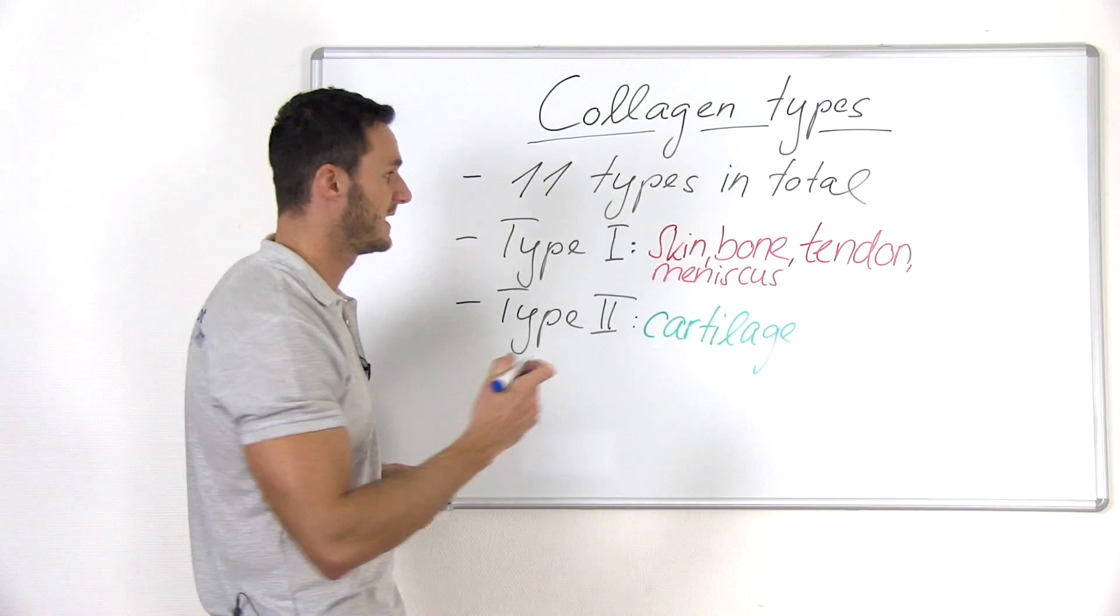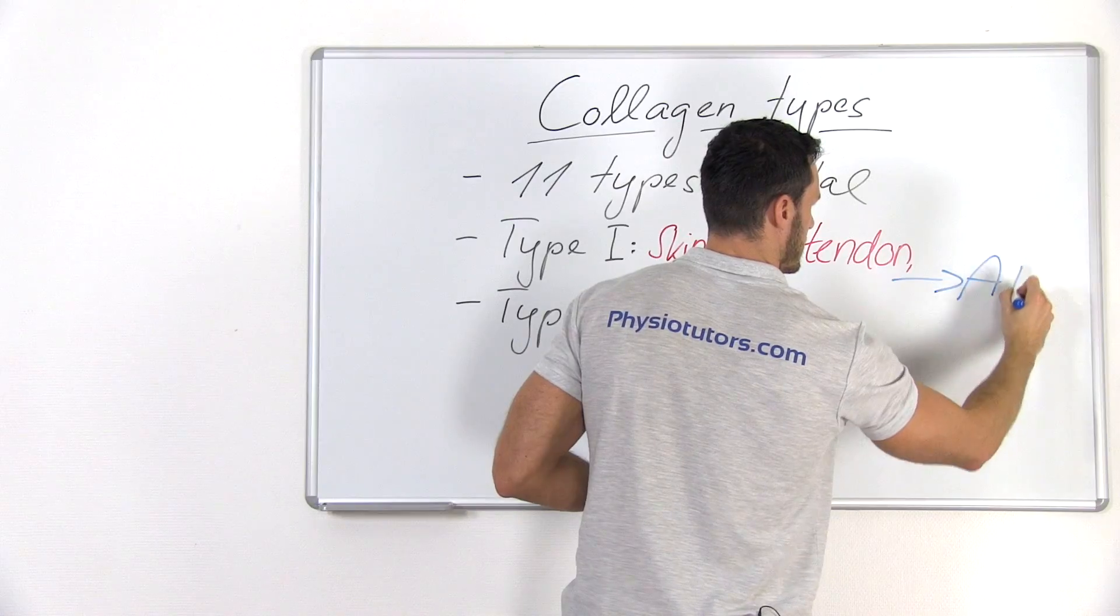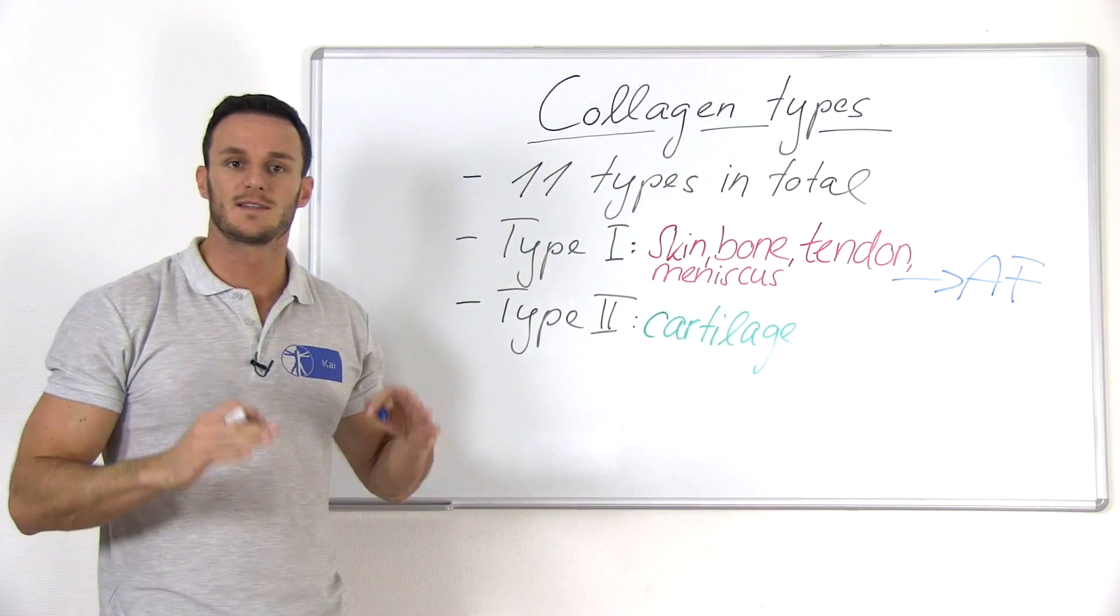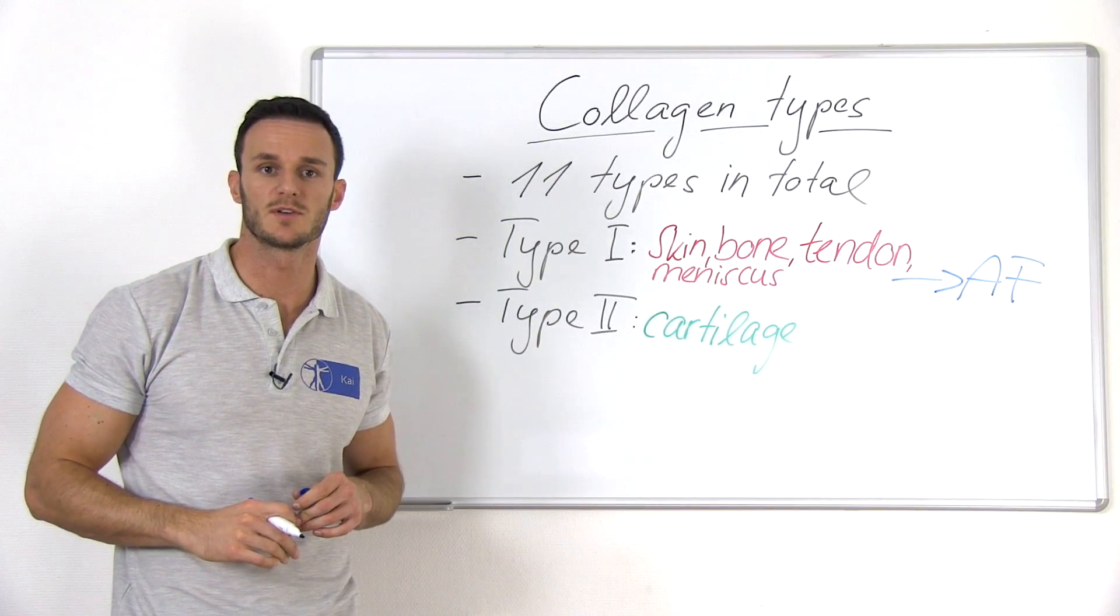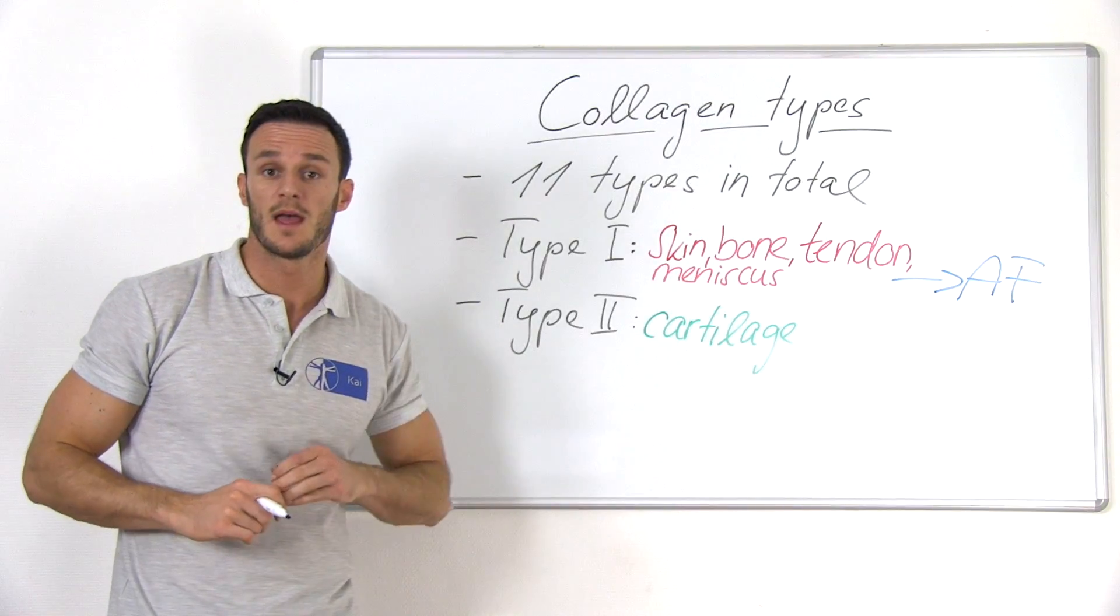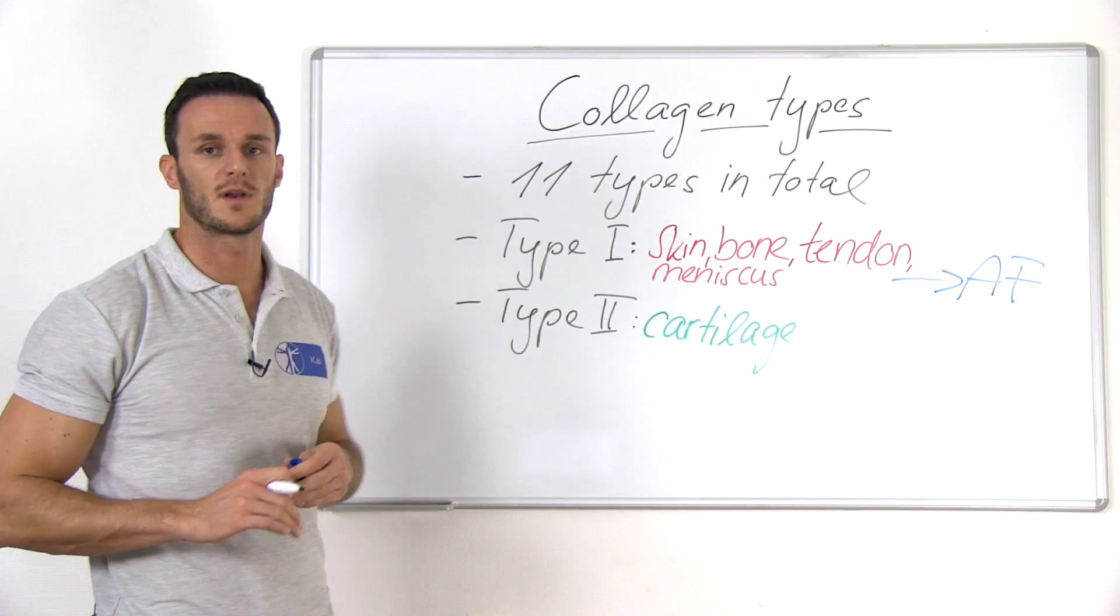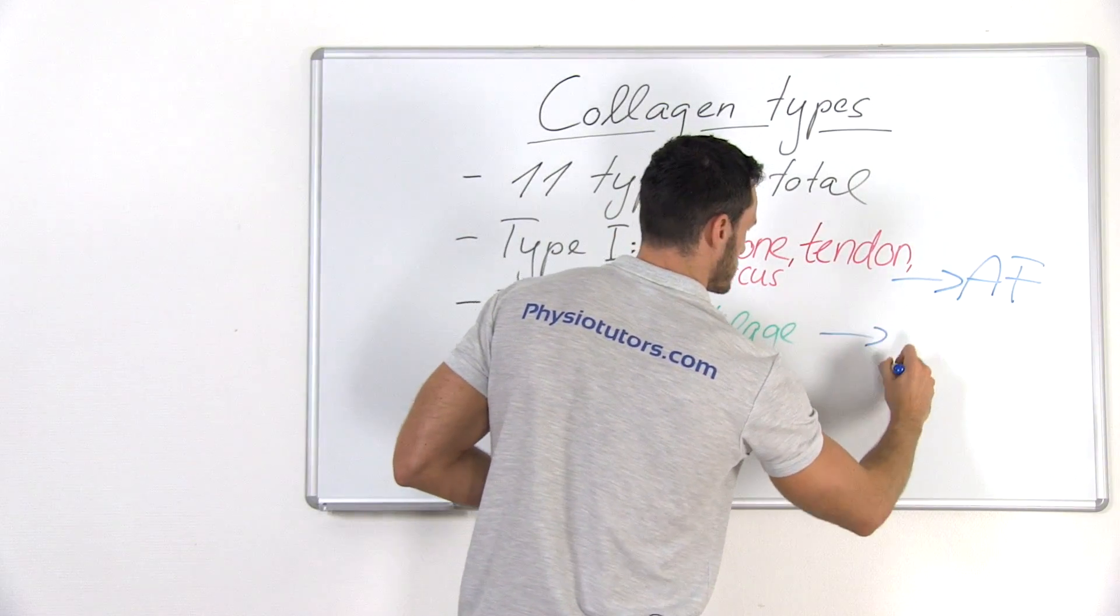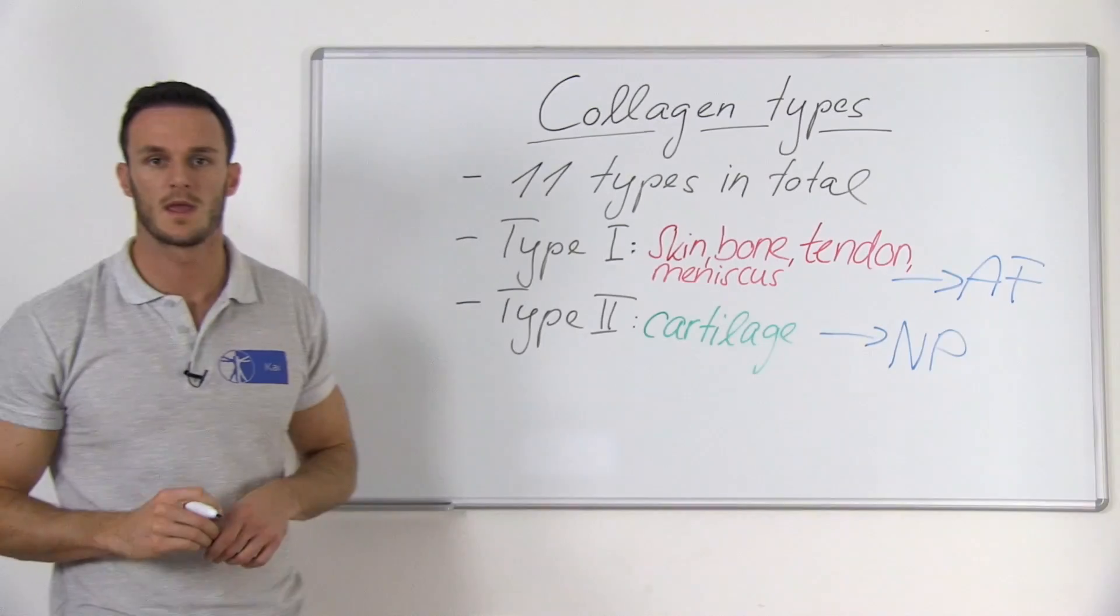More important in our case, it can especially be found in the annulus fibrosis. Type 2 collagen is more elastic and typically found in tissues that are exposed to pressure, for example, cartilage. And in our case, it's important to realize that the type 2 collagen fibers are mainly found in the nucleus pulposus.